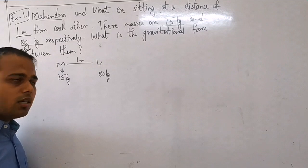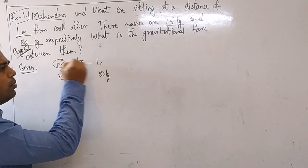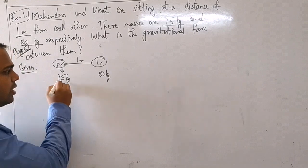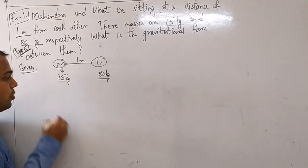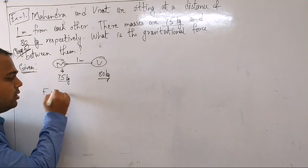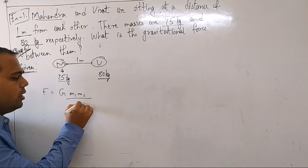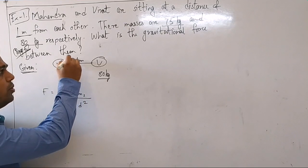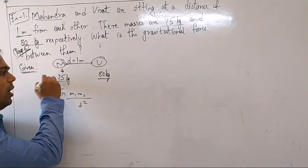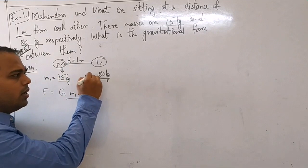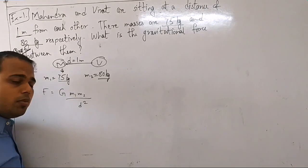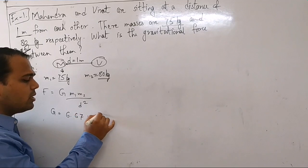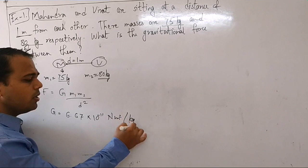We have to find the gravitational force. We know that for two objects, the formula is F = G m1 m2 by d². Here, d = 1 meter, m1 = 75 kg, m2 = 80 kg. The value of G is 6.67 × 10⁻¹¹ Newton meter square per kg square.